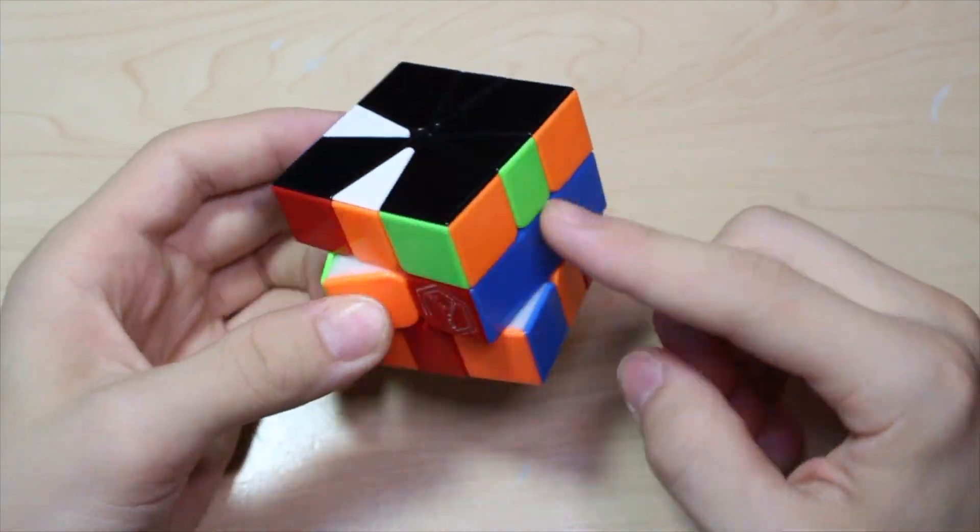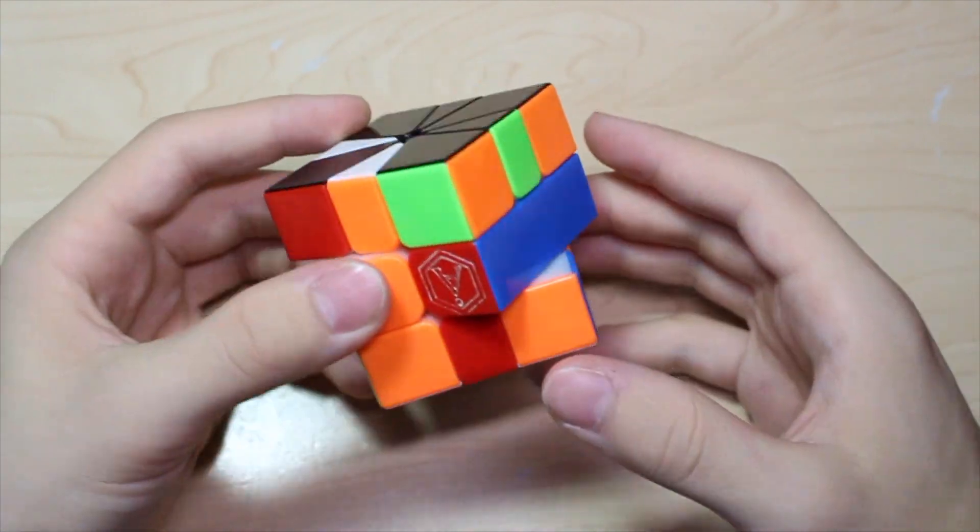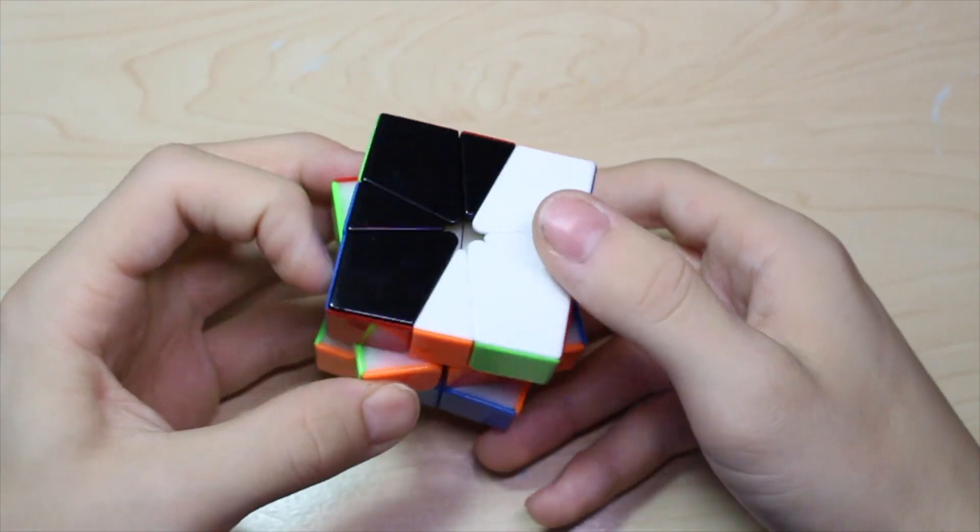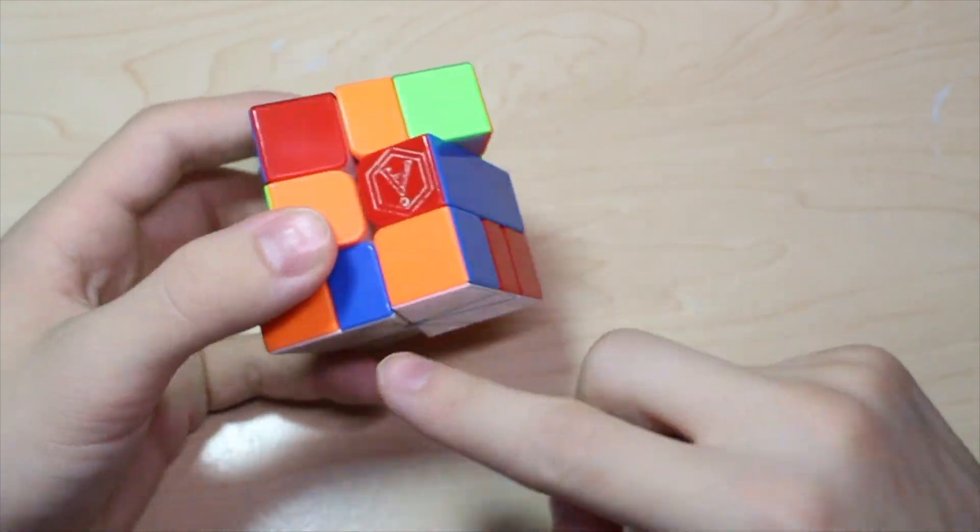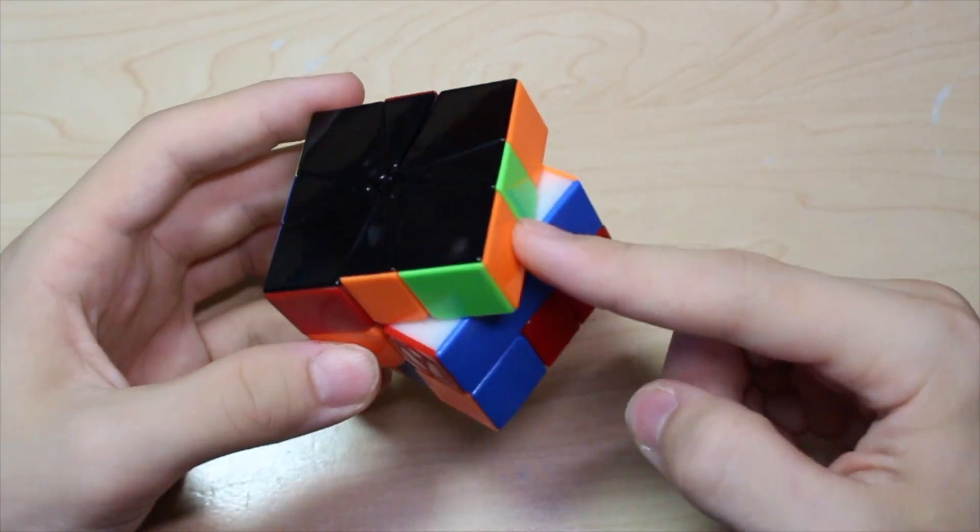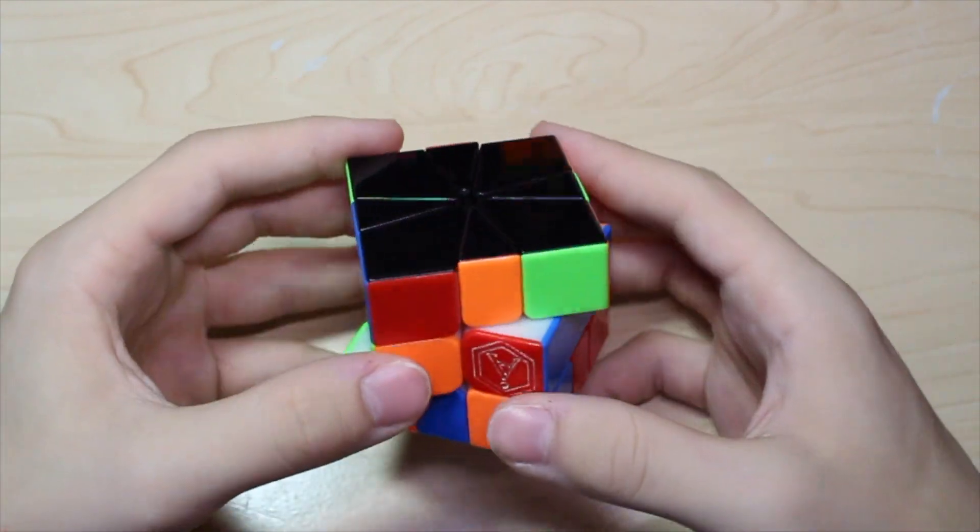And then EO. And I saw that I had adjacent here and adjacent here, so I knew that it was just going to be an adjacent adjacent swap. And since the movement of the pieces don't really change that much for this EO case, it was easy to see where these corners are going to end up.